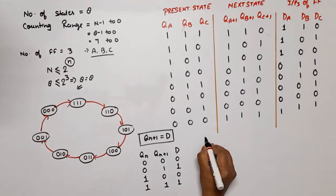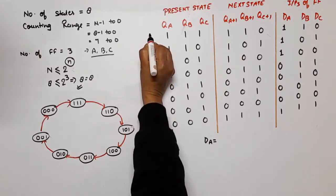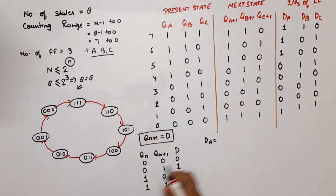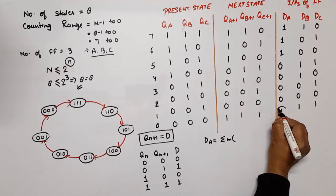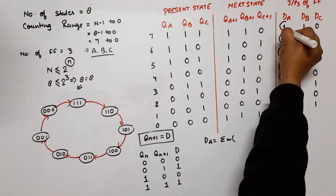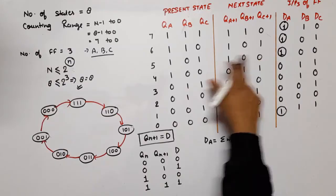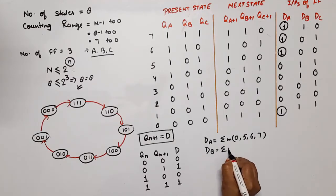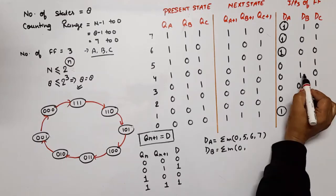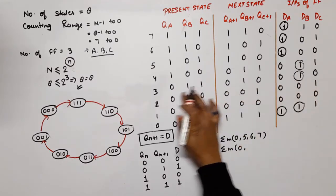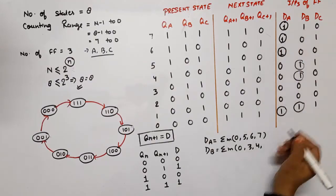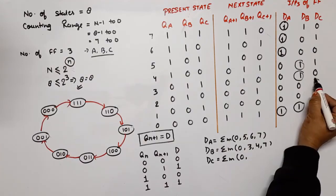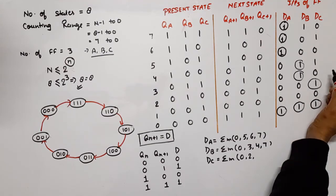dA is equal to minterm 0, 5, 6, 7. dB is equal to minterm 0, 3, 4, 7. dC is equal to minterm 0, 2, 4, 6.